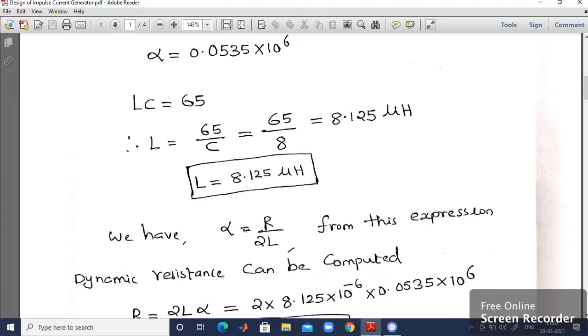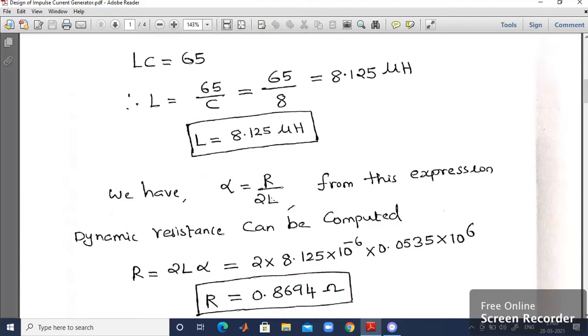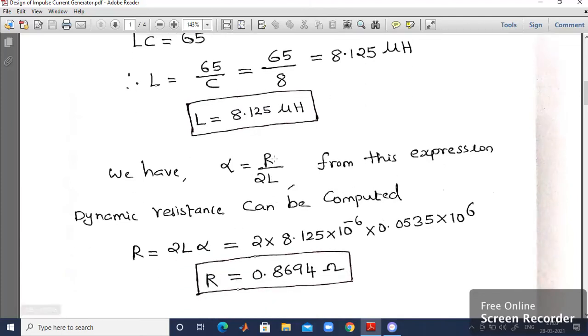And also there is another expression. I already explained during the design of impulse voltage generator. That is alpha is equal to R by 2L. Alpha value will be obtained from table 2. Please do refer the table 2 which I have shown earlier. Alpha is equal to R by 2L. So from this expression I can calculate R.